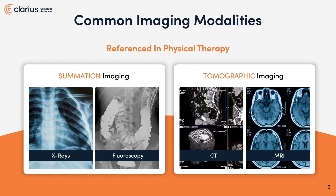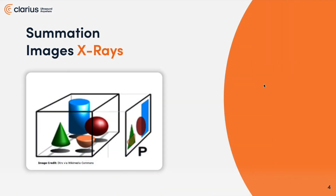First, summation imaging, and then we'll talk about tomographic imaging. In summation imaging, as you can see on this orange framed representation at the letter P, the image from x-rays are of the items in this room summed together or placed on top of each other. I like to think of it simply as if there were a sofa in that room and your friend was hiding behind it, you would see your friend through the sofa, with various items summed together in the picture.